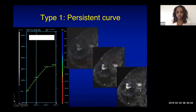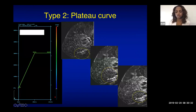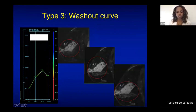A type 1 or persistent curve shows an initial peak that continues to rise, with enhancement increasing beyond two minutes. A plateau curve shows an initial rise followed by no significant change in enhancement after two minutes. A washout curve shows an initial rise followed by a decline in enhancement intensity after two minutes — this is the most suspicious pattern.